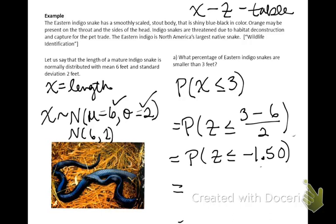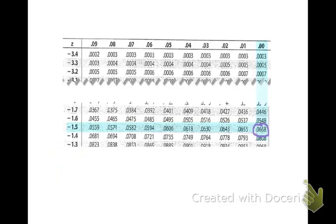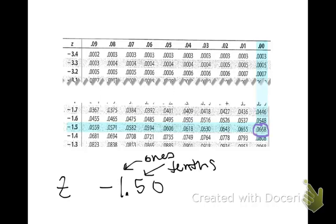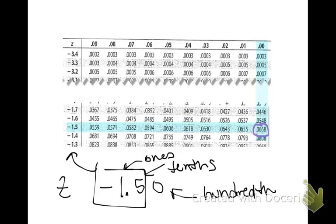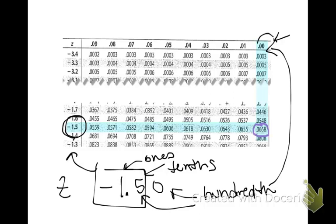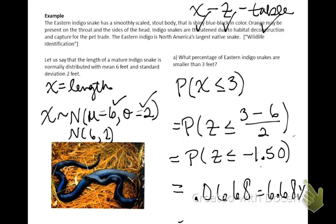We wrote this in terms of x, converted to z, and now go to the table. Our z-score is negative 1.50. The ones and tenths position falls along the side of the table; the hundredths position falls across the top. Going to negative 1.50 and lining it up, the answer is 0.0668. So there's about a 6.68% chance that a snake would be smaller than 3 feet.